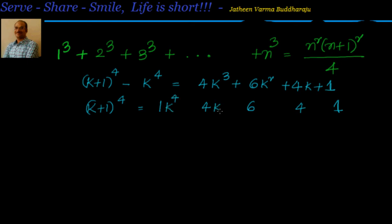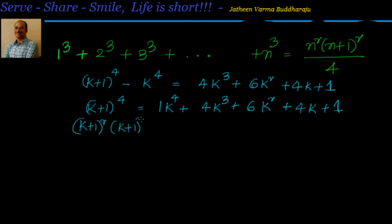The k powers start at the maximum and reduce, giving terms k cube, k square, and k with addition between them. You can also cross-check by expanding k plus 1 whole squared into k plus 1 whole squared — you will end up with the same value: k to the power of 4 plus 4k cube plus 6k square plus 4k plus 1.